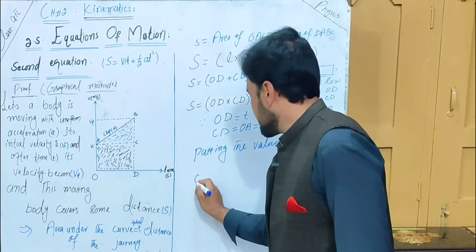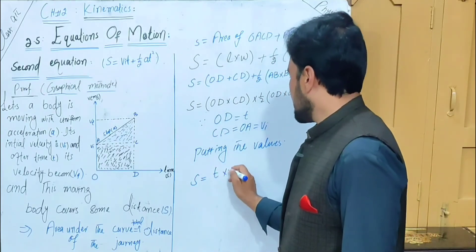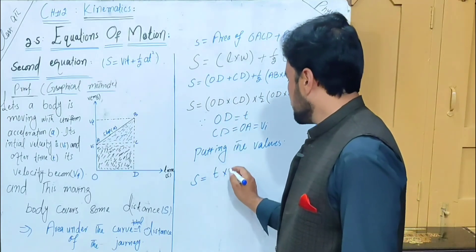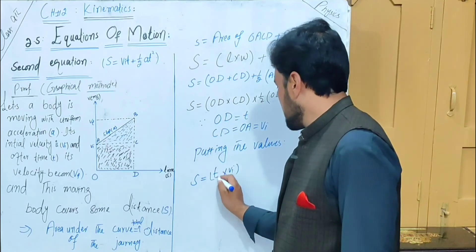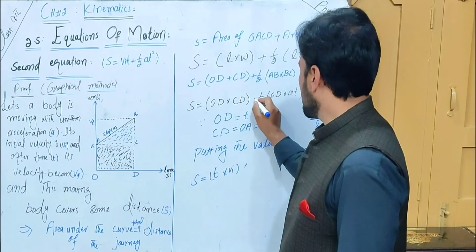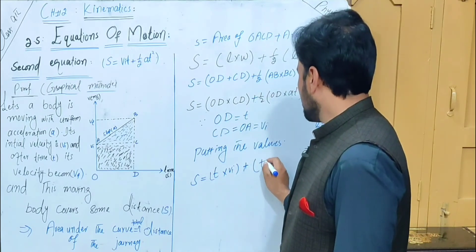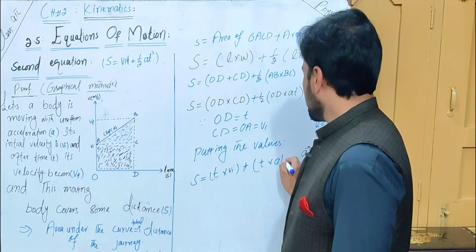Putting the values: distance s equals t cross CD, which equals v_i, plus one half into OD, which equals t, cross at.